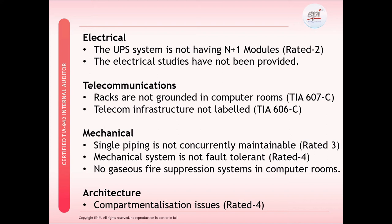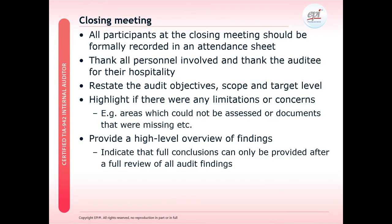For telecommunications, racks are not grounded in computer rooms and telecommunication infrastructures are not labelled. Within the cooling systems, Rated 3 and 4 data centres need to be concurrently maintainable, so if we have single piping systems for cooling or single piping fuel systems, they will not be concurrently maintainable. Rated 4 needs fault tolerance, so the various mechanical systems may not have the appropriate systems in place to detect an issue, isolate it and switch to the backup. There may be infrastructure which is not provisioned, like no gas suppression systems in computer rooms when it is a requirement. For architecture, we find various issues around compartmentalization for Rated 3.